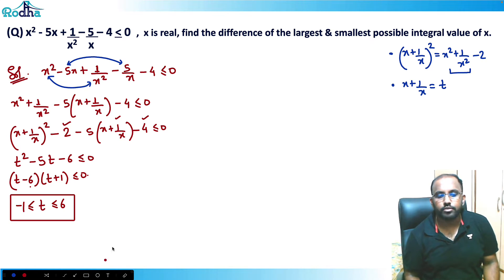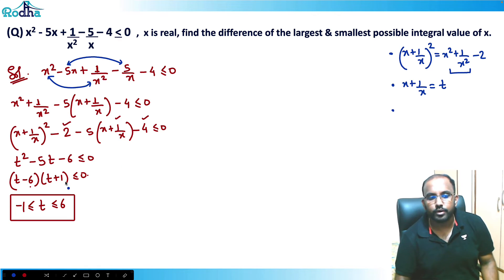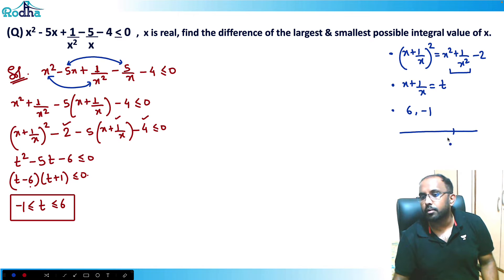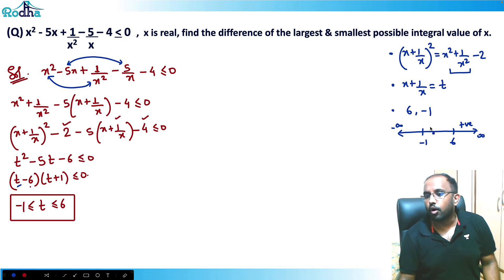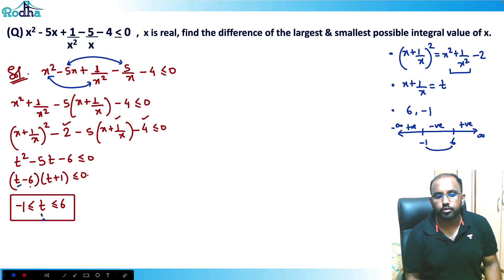Let me explain: (t - 6)(t + 1) ≤ 0. Roots are 6 and -1. On the number line, plotting -1 and 6, from positive infinity downward: values greater than 6 are positive, then alternate negative and positive. So negative values lie from -1 to 6 — that's what I've written here.